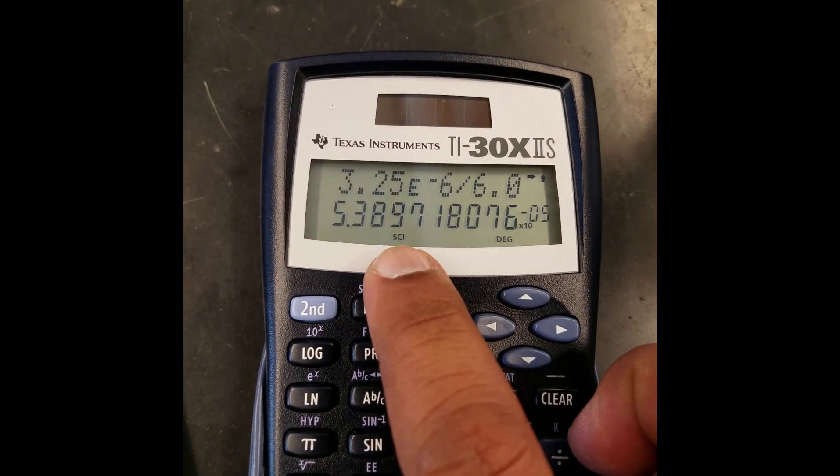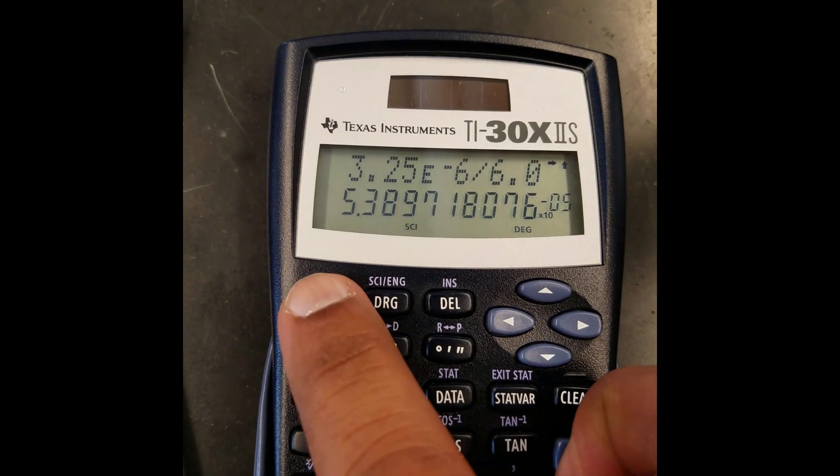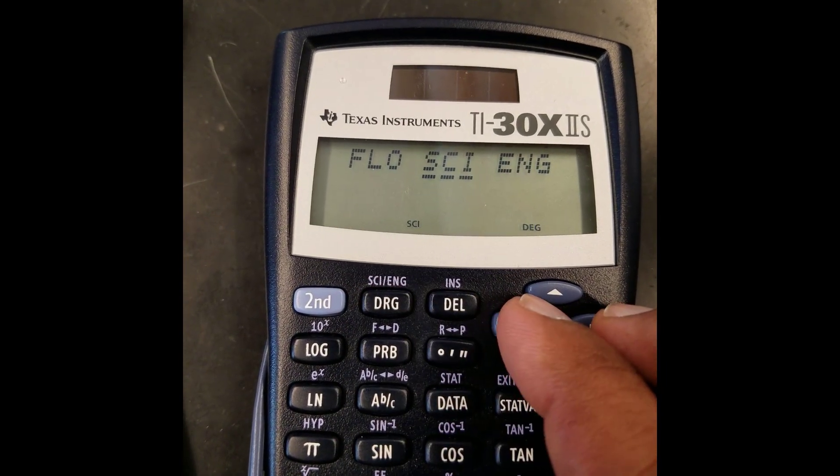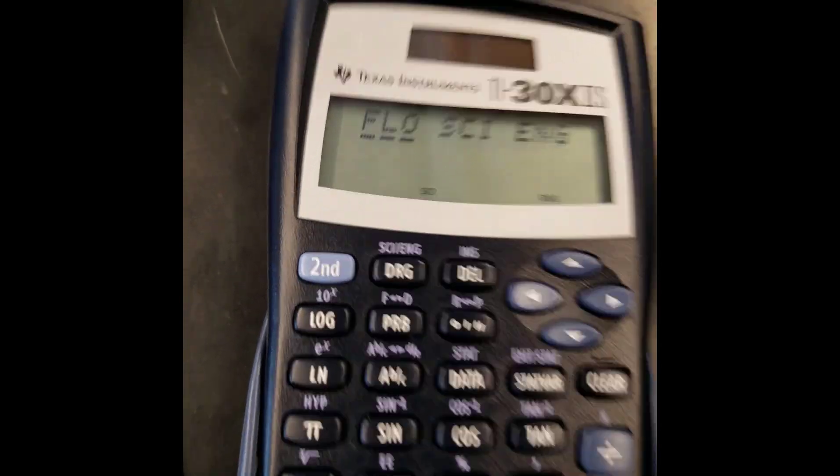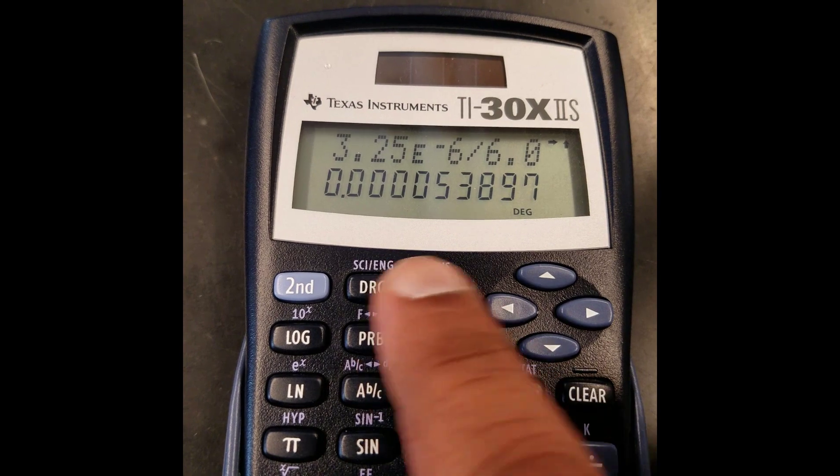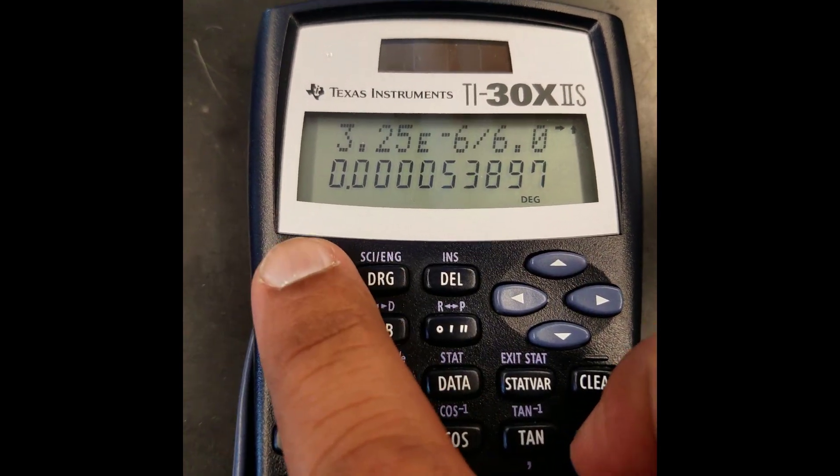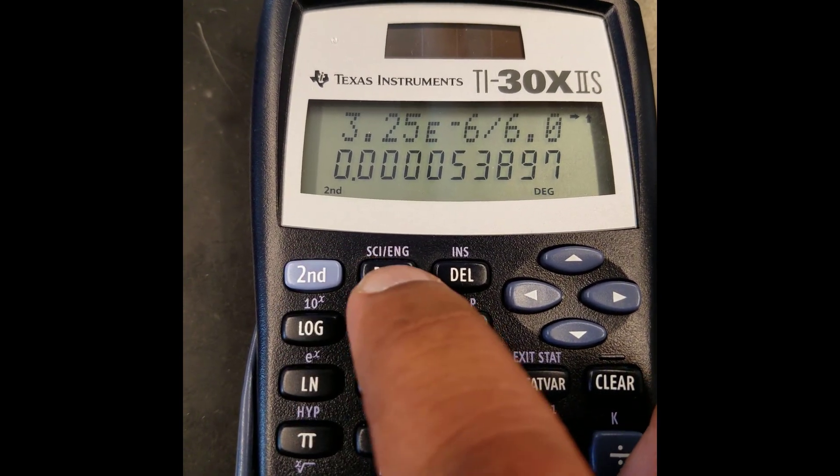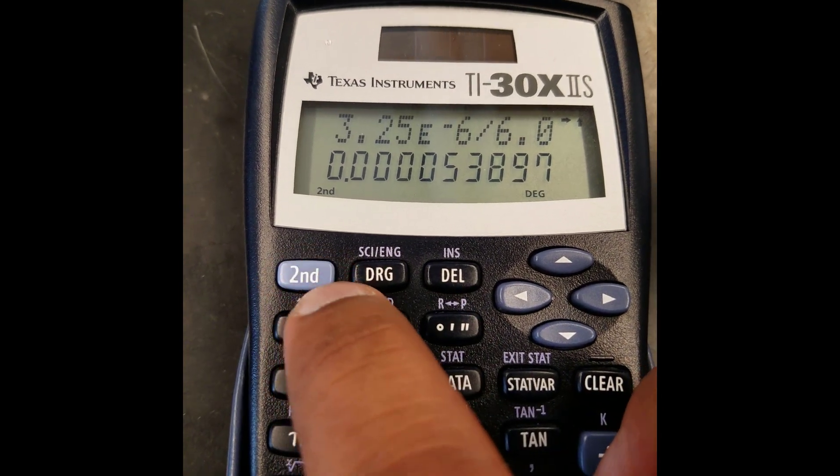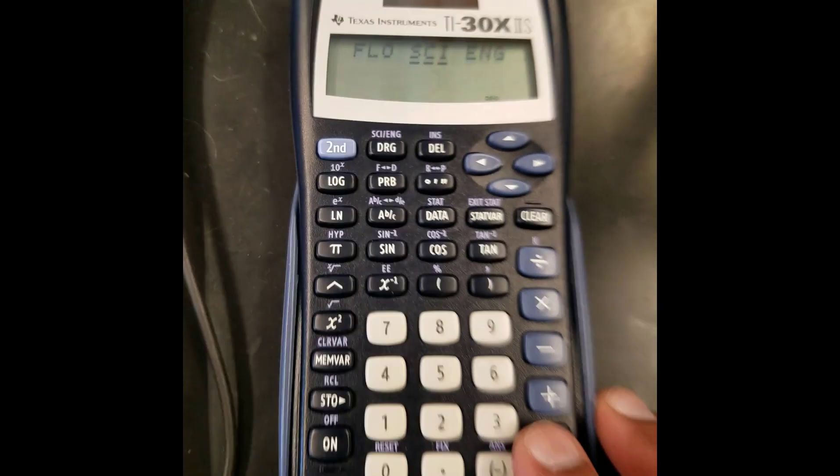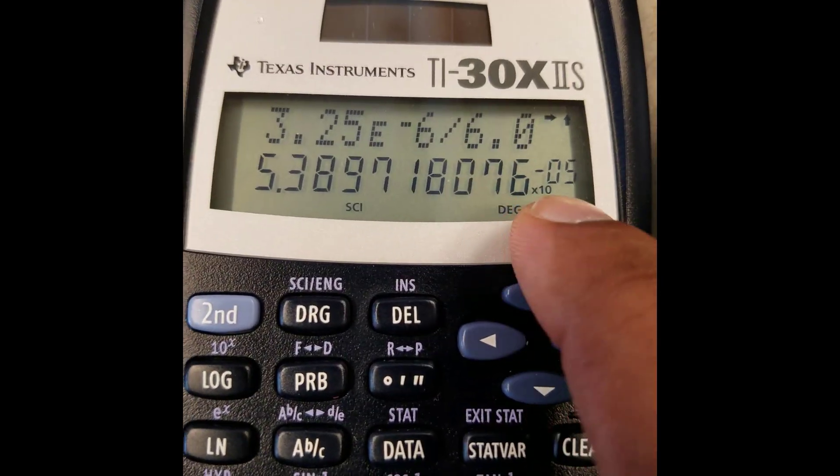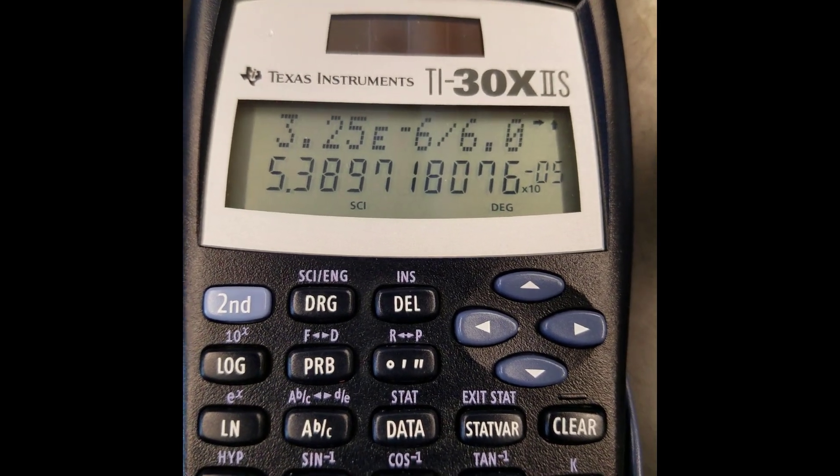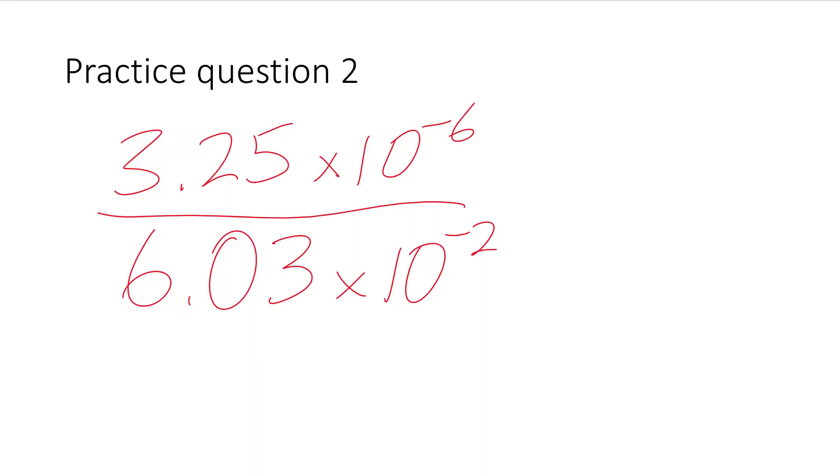You can notice that I already have it in scientific notation mode, but you can take it off by hitting second function and the psi button. On other calculators, it's a mode button. Now flow, I don't know what flow stands for, but flow is standard notation. But you always want to put it in scientific whenever possible. So you do second function and psi again. This is the drg button, but we're not using a drg function. We're using psi. So second function, psi, we move back to psi and hit enter. And you notice the answer comes back in scientific notation. It's very important to write the times 10 part.